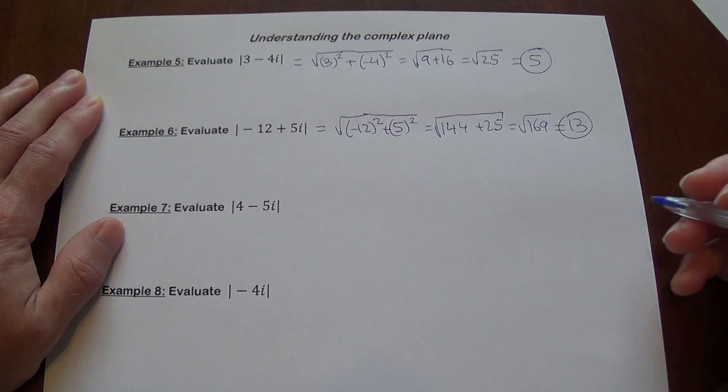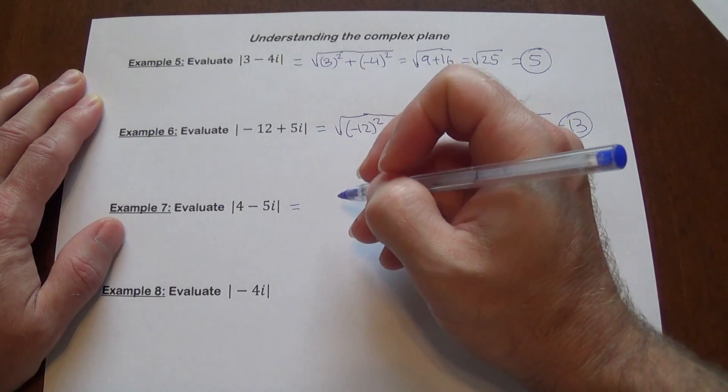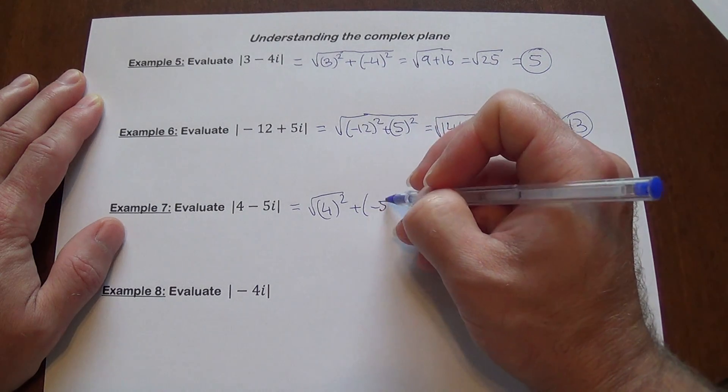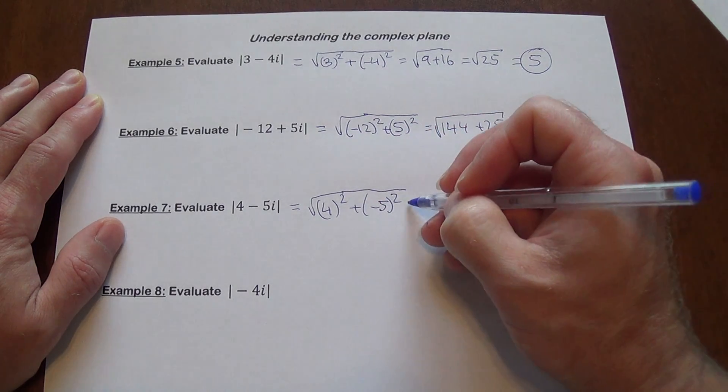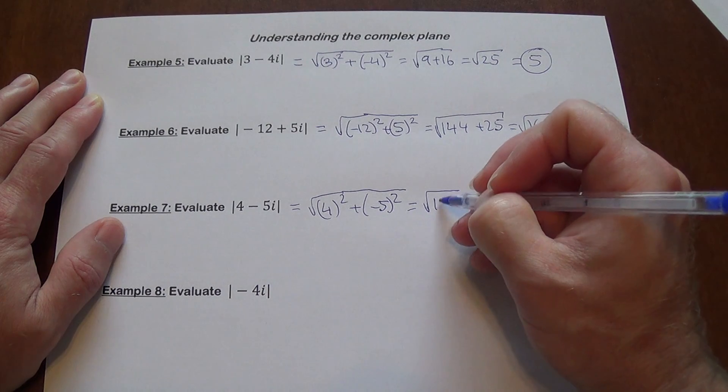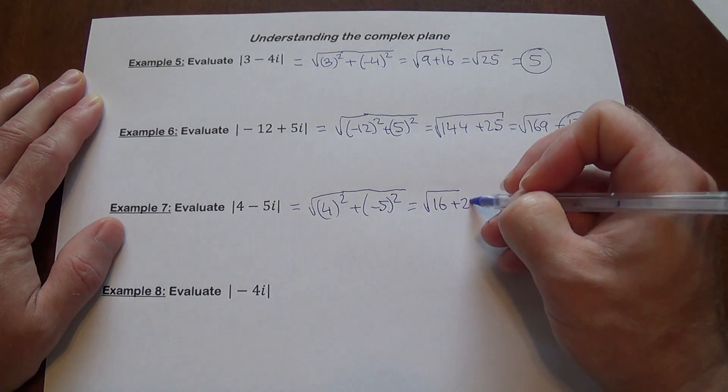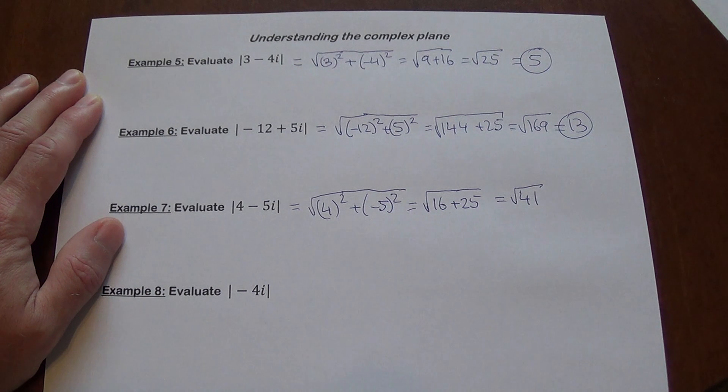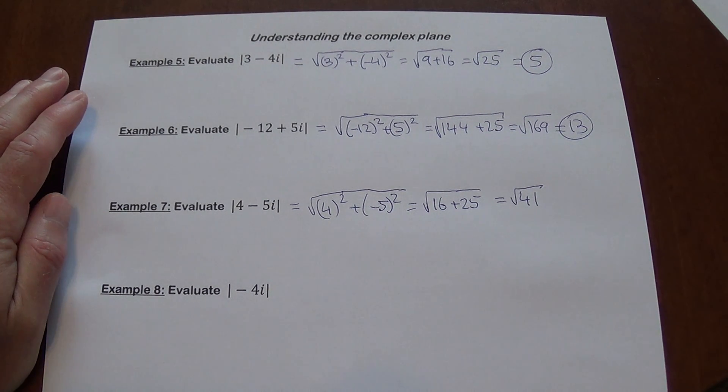4 minus 5i, modulus of that will be square root of 4 squared plus negative 5 squared, which is square root of 16 plus 25, which is square root of 41. It's not a perfect square, nor can you simplify it, so we're just going to leave it like that.